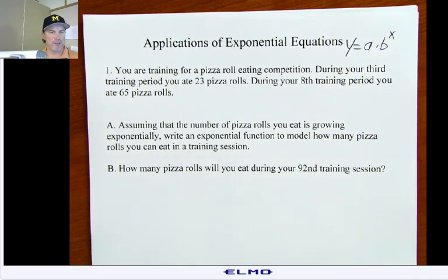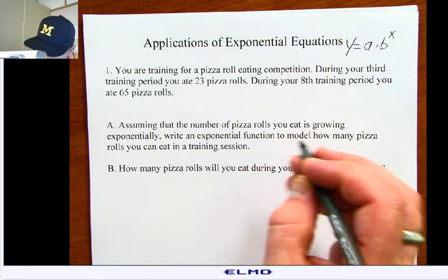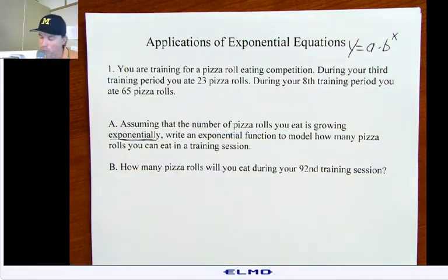You're training for a pizza roll eating competition. During the third training period you ate 23 pizza rolls. During your eighth training period you ate 65. Assuming that the number of pizza rolls you eat is growing exponentially, we need to write an exponential function to model how many pizza rolls you can eat in a training session. A side note, I was actually in an egg roll eating competition. I got second place but I was robbed because a pro showed up. I thought it was going to be an amateur egg roll eating contest. Back to business.